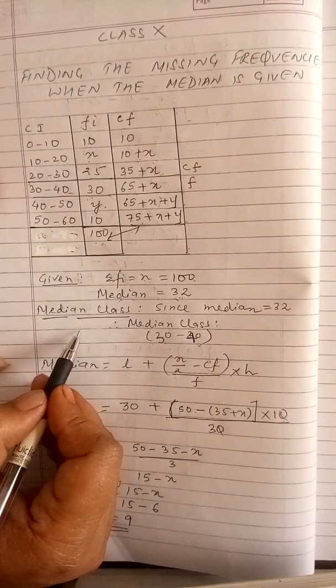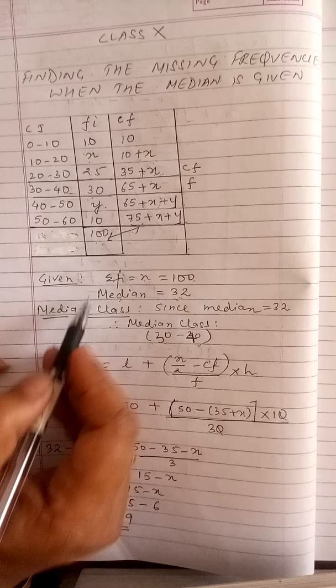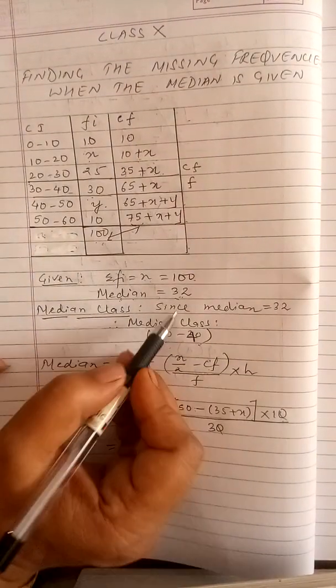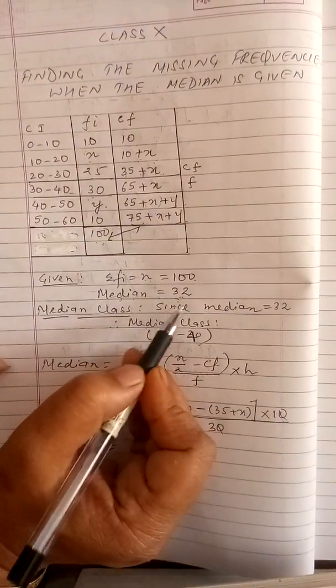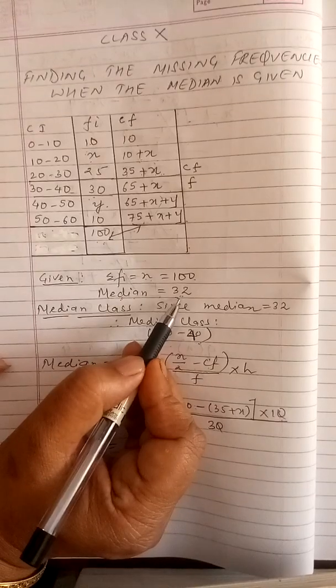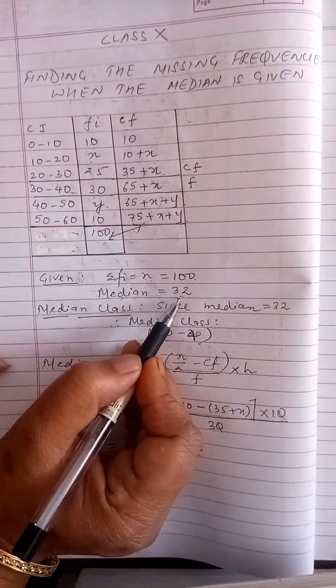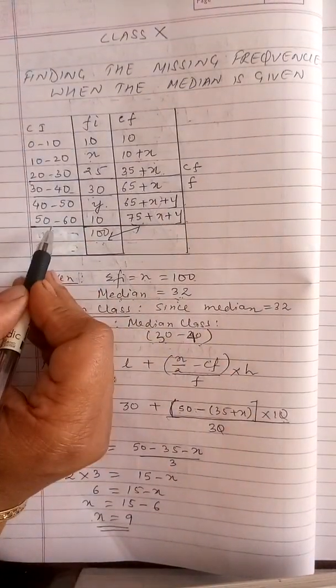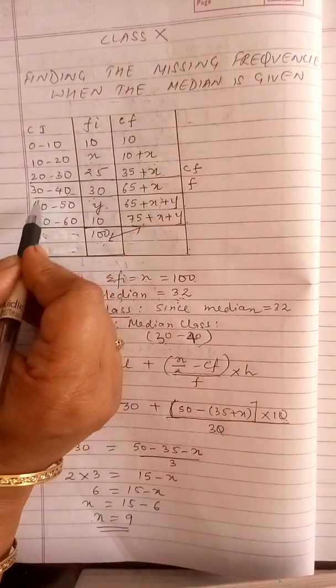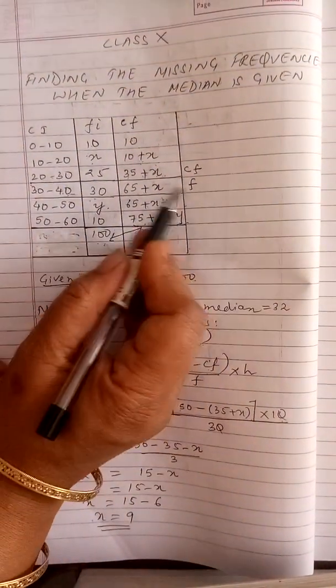Now coming to the first step, we first find the median class. In this kind of question where frequencies are missing, the method of finding the median class is a bit different. Since the median is given to you as 32, and the median always lies in the median class, 32 will lie inside the median class. I take this value 32 and go into the class intervals. 32 will lie between 30 to 40, so 30 to 40 becomes my median class.